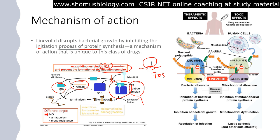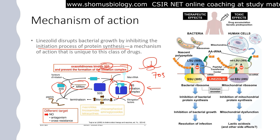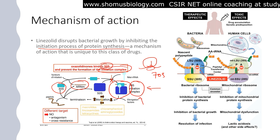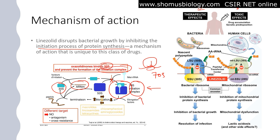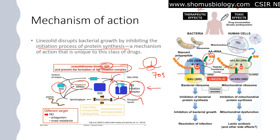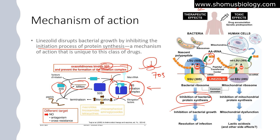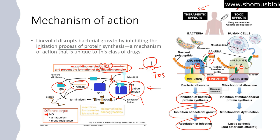Linezolid binds to the 50S subunit and prevents the formation of the 70S initiation complex in prokaryotic translation. Looking at the image, you can see the bacteria and its ribosome — Linezolid binds to the 50S subunit and will not allow the F-met tRNA to bring the amino acid, resulting in inhibition of protein synthesis, inhibition of bacterial growth, and resolution of infection.